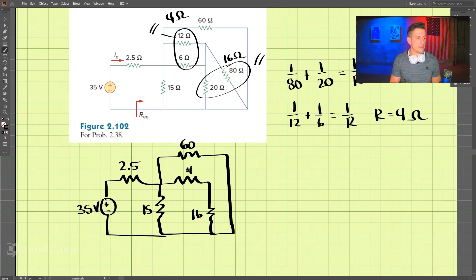And we have 16 and 4, these are in series. So we can add those together, 16 plus 4 is 20, 20 ohms for these two here.